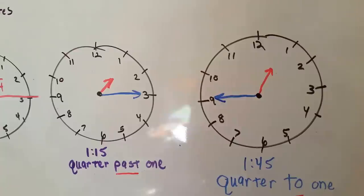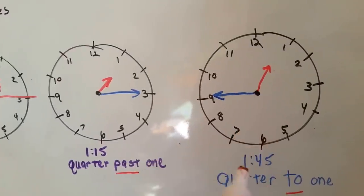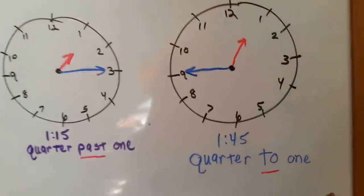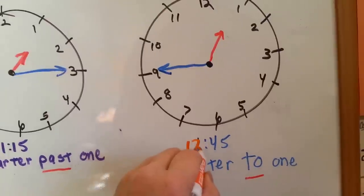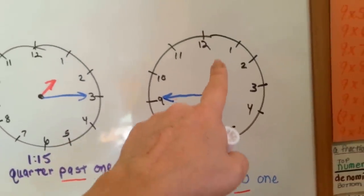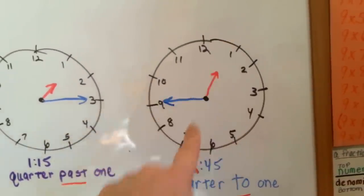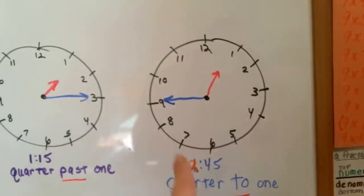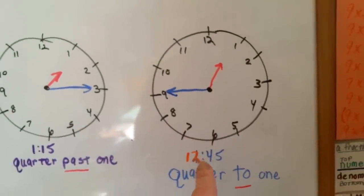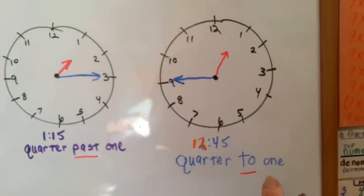...like in this case, let me fix this, it's actually 12:45 here, because it's not quite at the 1 yet. So this time would be 12:45. You would say it's quarter to 1.